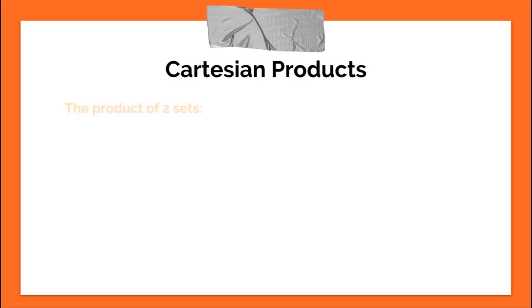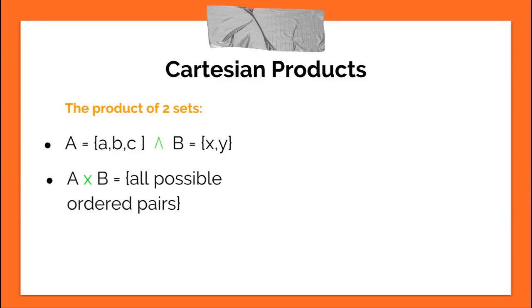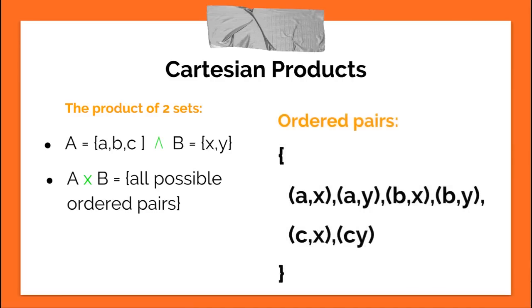Cartesian products. Just relax for a second and sit back and just get the concept. The Cartesian product is the product of two sets. Say A is a set which contains the values A, B, and C, and B is a set that contains the values X and Y. We would write the Cartesian product as A times B, and it's going to equal all possible ordered pairs. Ordered pairs are when we take an element in A and we match it with an element in B. So all possible ordered pairs are going to be AX, AY, BX, BY, CX, and CY.